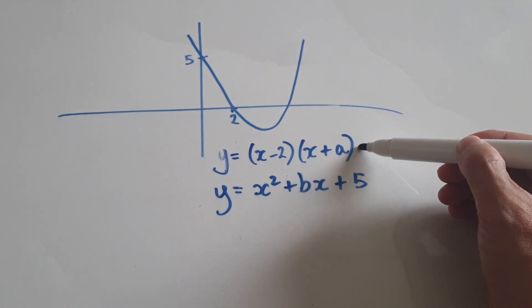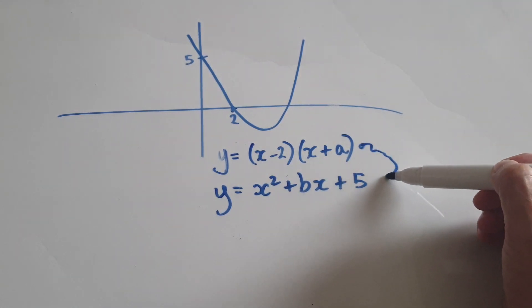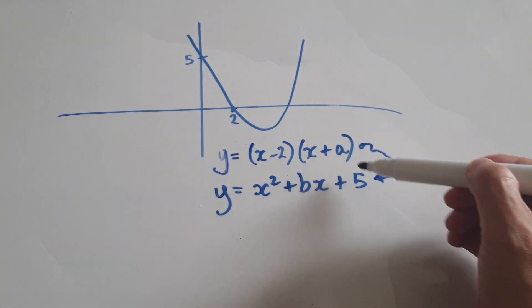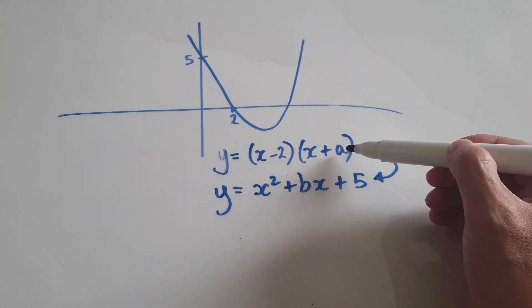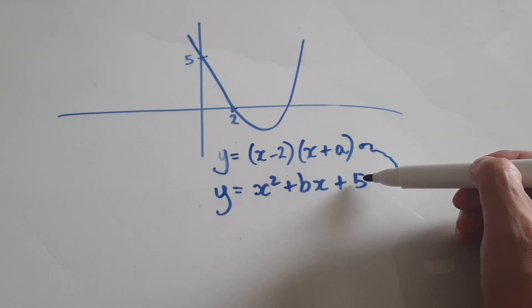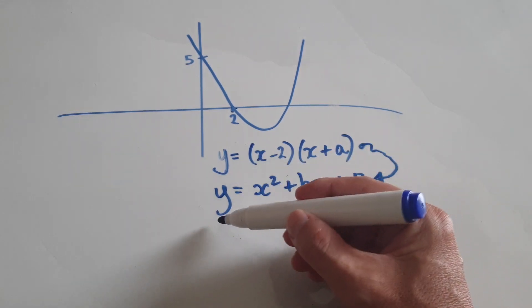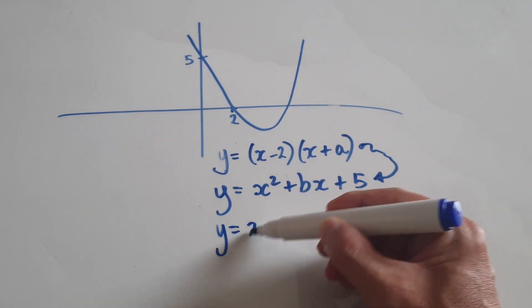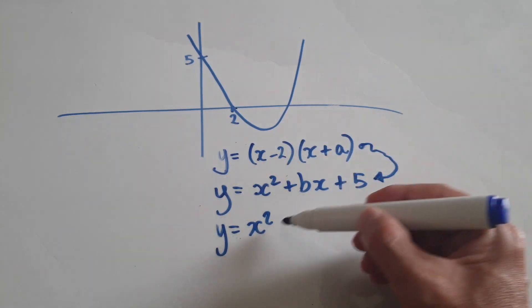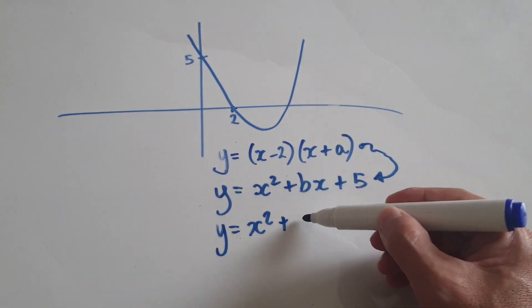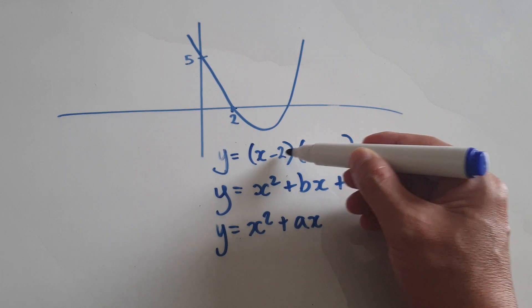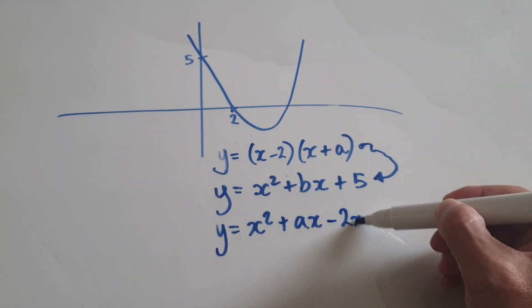So let's somehow get from here to here so we can force a in such a way that it would give us an intercept of 5. So, multiply this out. That will give us x squared. You're going to have plus ax and then negative 2x and then minus 2a.